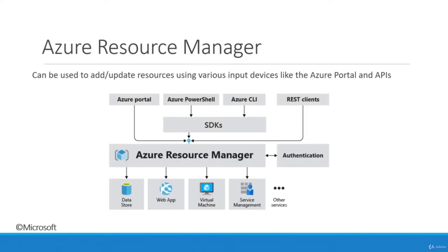The Azure Resource Manager is used to add or update resources using various input devices. It can control a web app, virtual machine, or data store through multiple interfaces: the Azure Portal (a web page), PowerShell, CLI, or API clients. Using a REST API call, you can call an Azure service through the Azure Resource Manager, which also handles authentication and authorization. If a third-party service has an API and needs to call a cloud service, it can use a REST client to authenticate and access the data source.